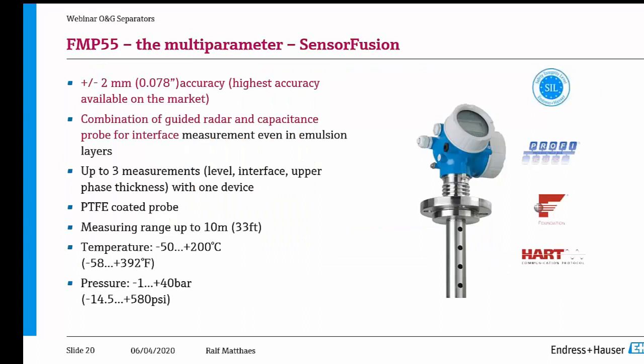Accuracy is in the range of 0.2 mm. It's a combination of guided wave radar and capacitance probes. You can measure up to three measurements with one device: level, interface, and upper phase thickness. The probe is PTFE coated, measuring range up to 10 meters, temperatures up to 200 degrees C, and pressure up to 40 bar.